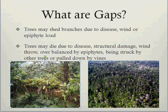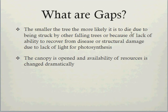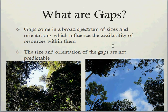So gaps occur in tropical forests with a variety of sizes and orientations. The smaller the tree, the more likely it is to die from being struck by other trees. When the canopy is open, the availability of resources changes dramatically. Gaps come in a broad spectrum of sizes and orientations, both of which influence the availability of resources within them. The larger the gap, the more light, the more moisture, and on the forest floor, the less root competition there is, and therefore the more nutrients are available — at least until the trees grow back.